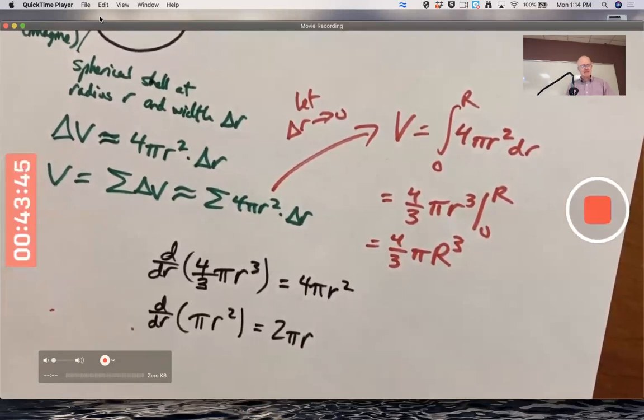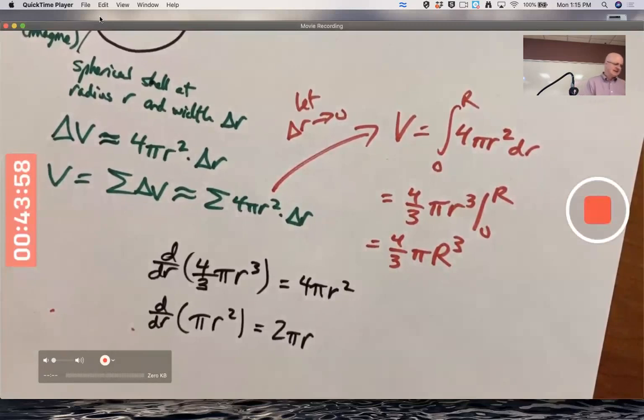I wonder whether that generalizes to other kinds of objects. And the answer is yes, it does, though the formulas for volumes and or surface areas of those other kinds of objects could be not so nice and uniform. Circles and spheres are very nice, right?